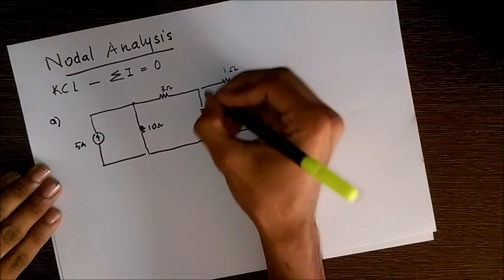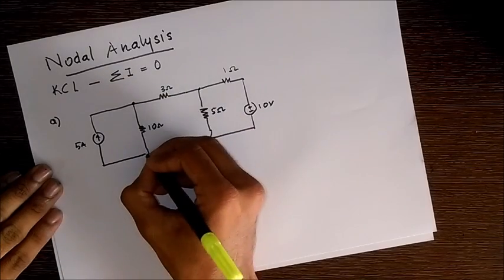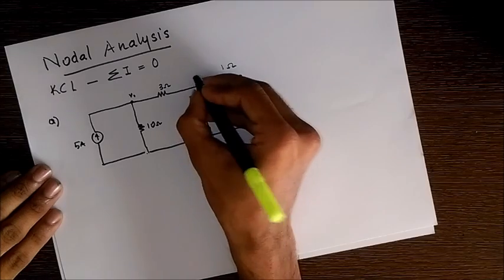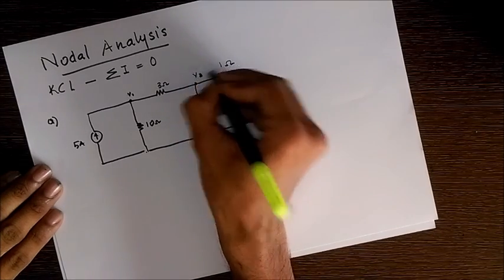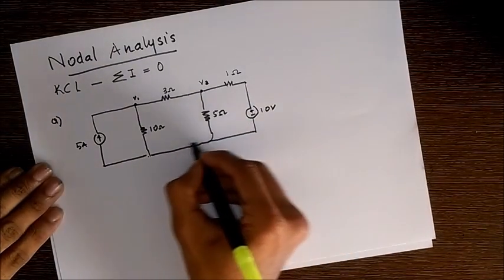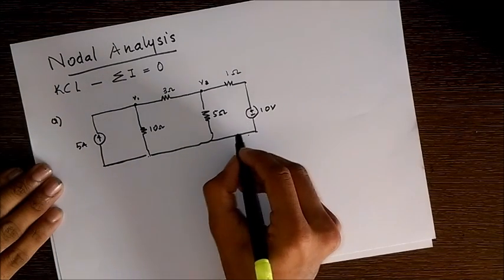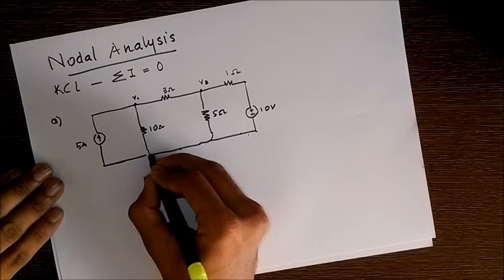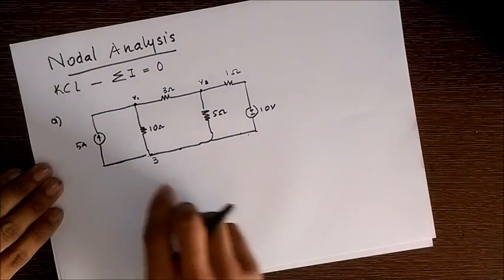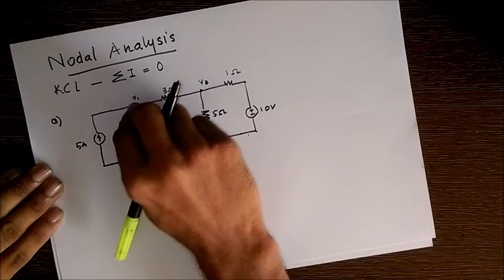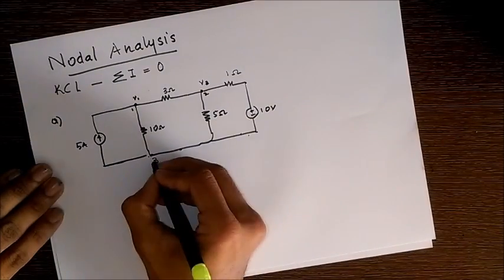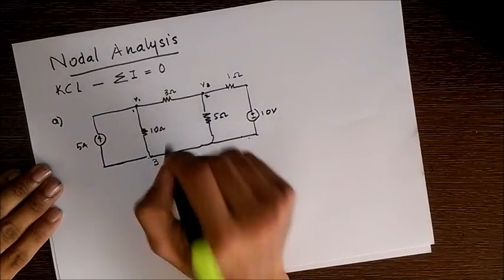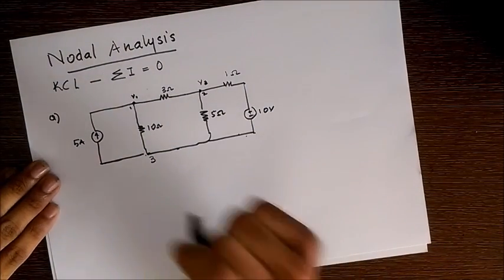We have to find the voltages at these two points. Let me name this node, this is a node. You can see that this whole branch has no single element in it, so it is actually a single point and thus a node. So we have three nodes: one, two, and three. The first thing in node analysis is that we observe how many nodes are present.